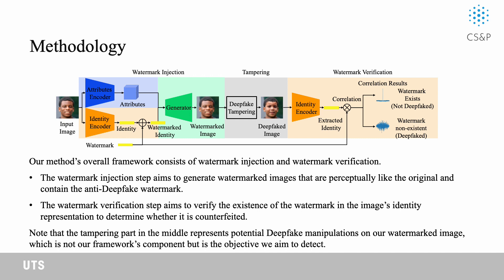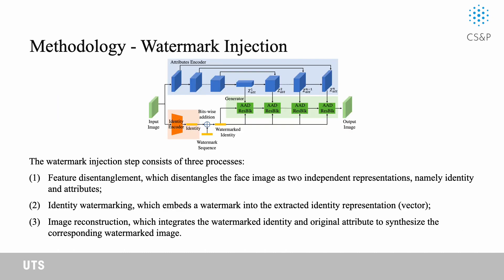Specifically, our method includes two parts: watermark injection and watermark verification. The injection step aims to generate watermarked images that are perceptually similar to the original and contain the invisible deepfake watermarks. In particular, the watermark injection step consists of three parts: feature disentanglement, identity watermarking, and image reconstruction.